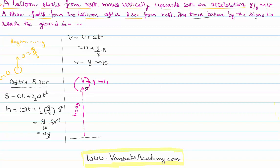So here is the stone, dropped at this instant. Until now the balloon has a velocity g, and the stone, being a part of the balloon, also has the same velocity.